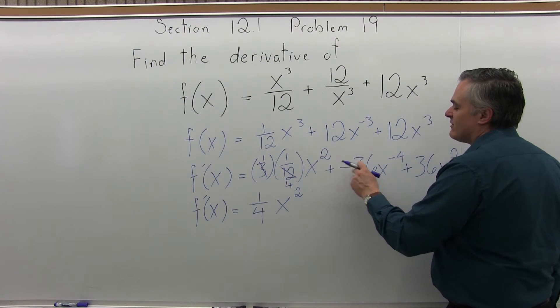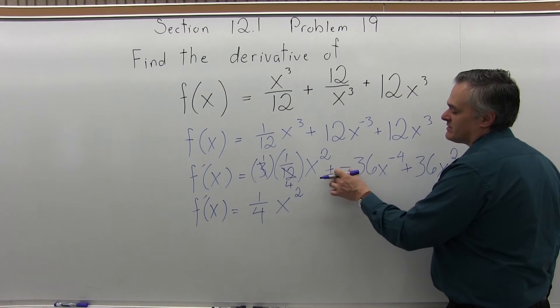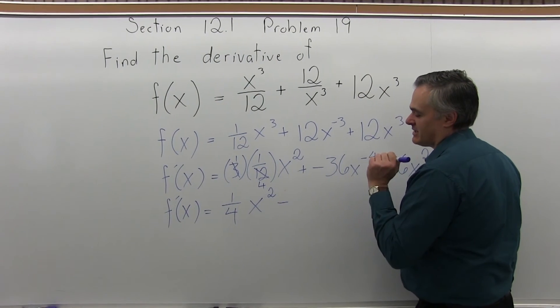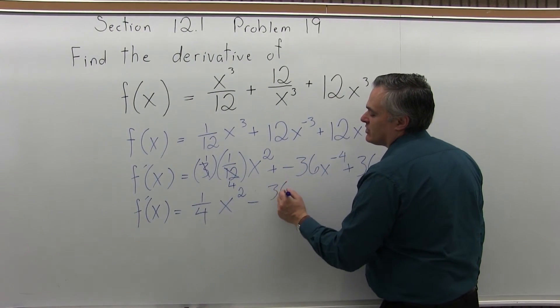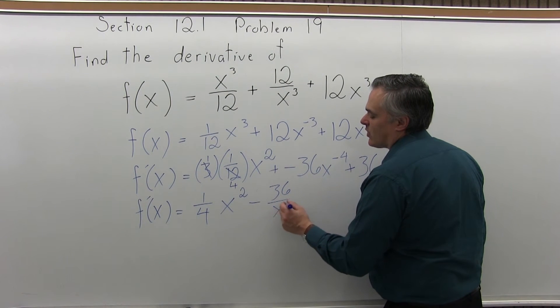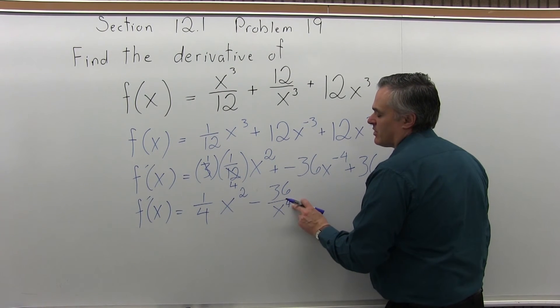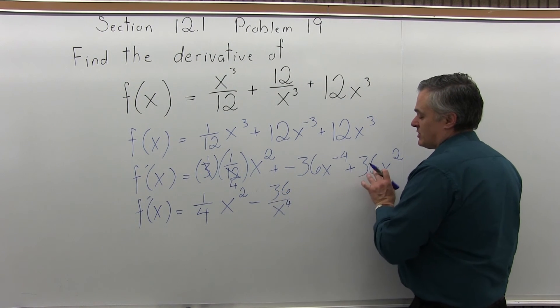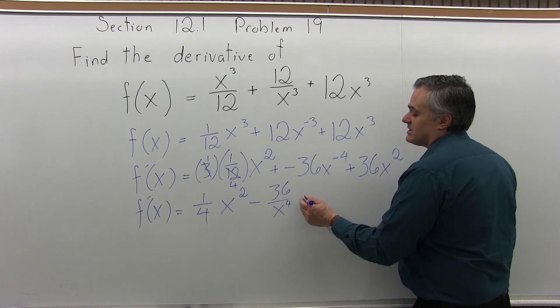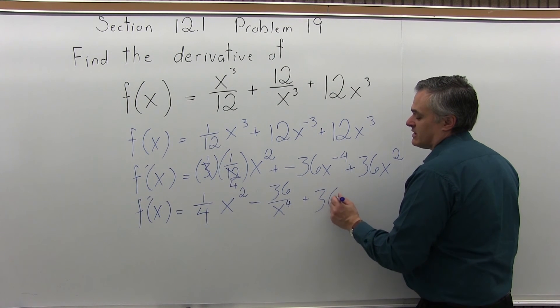Now the middle piece, plus and negative 36x⁻⁴. First of all, the plus and negative, let's make it minus. And instead of x⁻⁴, we can write it as 36/x⁴. The positive exponent makes more sense. We do have to put it in the denominator, but I think that makes more sense. And the piece at the end, 36x², can just stay the way it is.